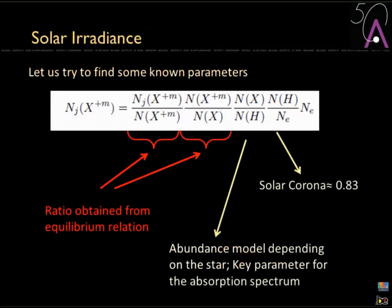To come back to something we know, we decompose the number of ions in a given excited state. We divide by the number of ions in the ground state — given by quantum mechanics — and also consider the number of that element relative to hydrogen, called the abundance, which depends on the stellar model used. The ratio of hydrogen to electrons, approximately 0.83, is known by measurement. This links everything back to measurable quantities.